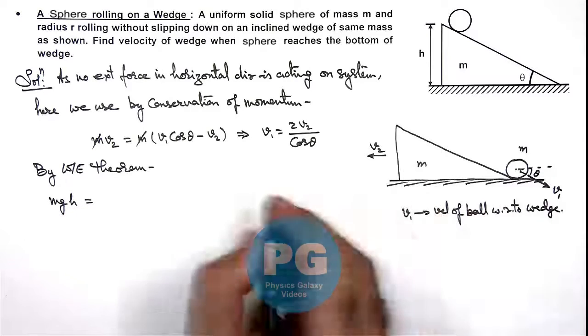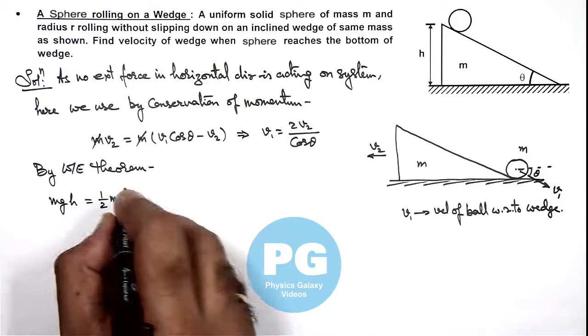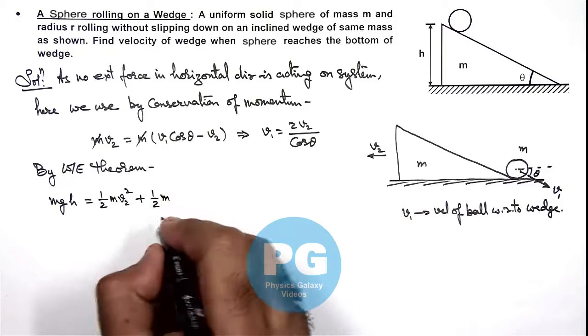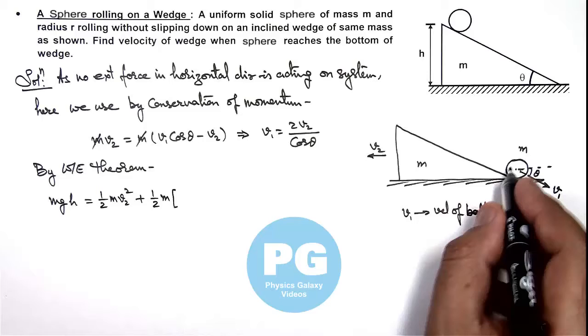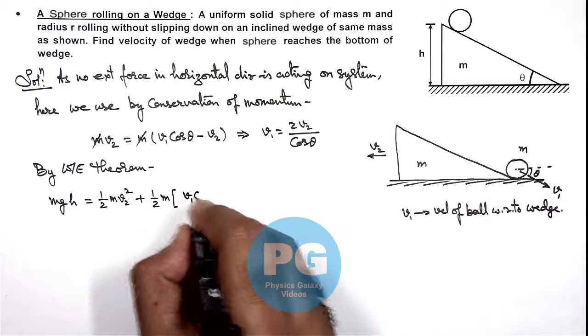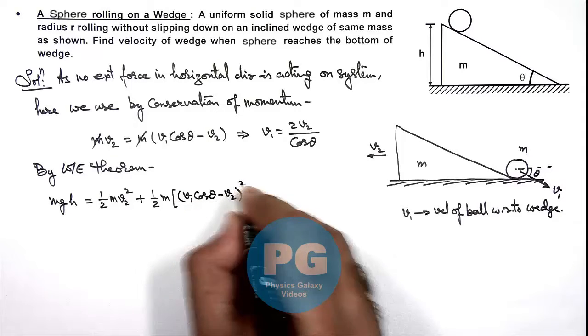Of wedge plus ball. So for wedge it is half m v2 square, plus for ball we can write it is half m. It has two velocity components so we can write one as the horizontal velocity component which is v1 cos theta minus v2 whole square, plus